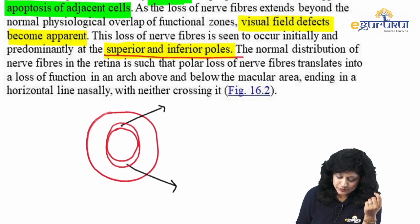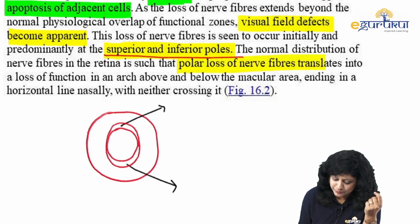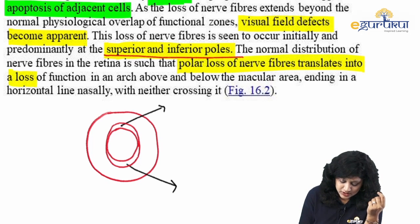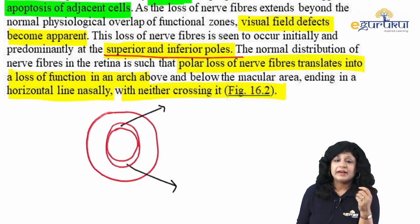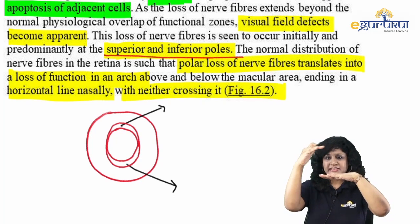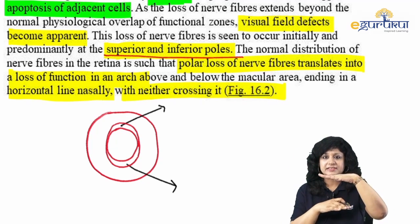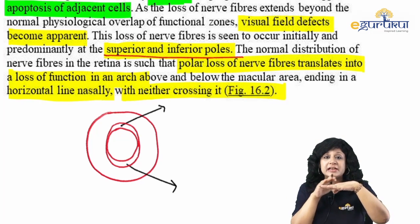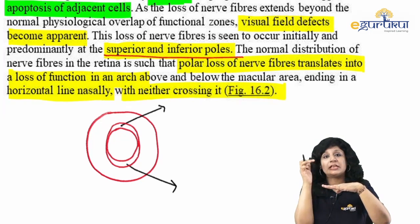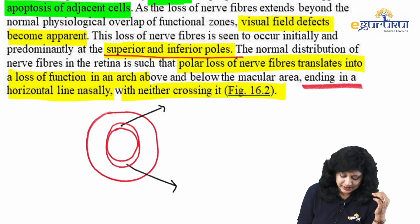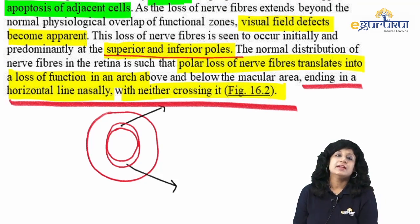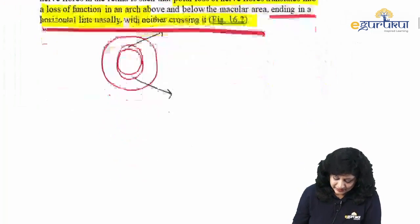The normal distribution of nerve fibers in the retina is such that polar loss of nerve fibers translates into a loss of function in an arch above and below, ending in a horizontal line nasally without crossing it. Because of the selective loss of superior and inferior fields, the visual field presentable in glaucoma patients is more horizontal, represented by a horizontal line.